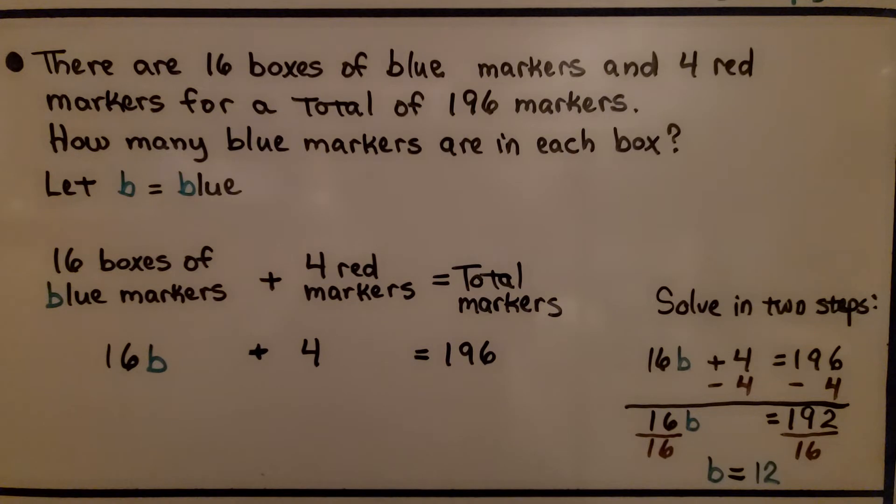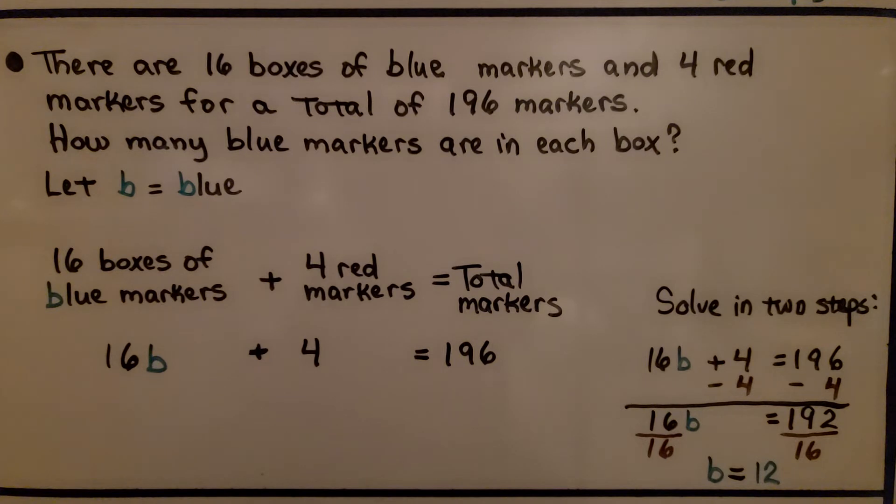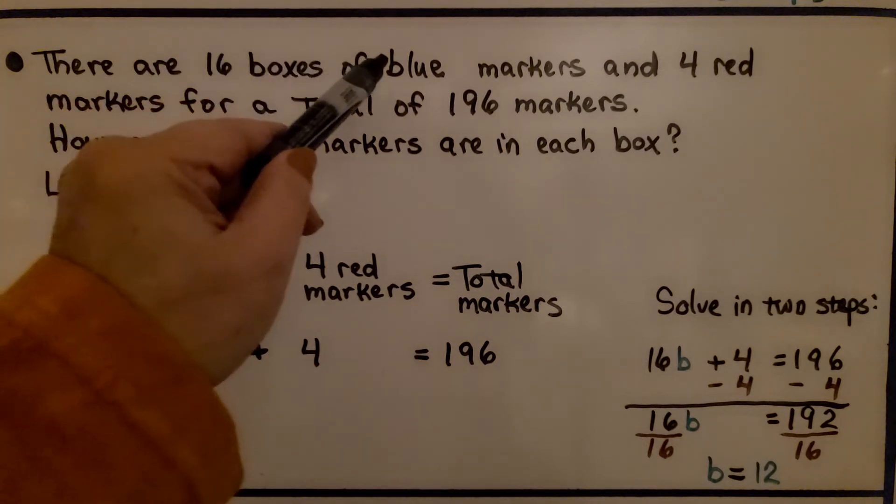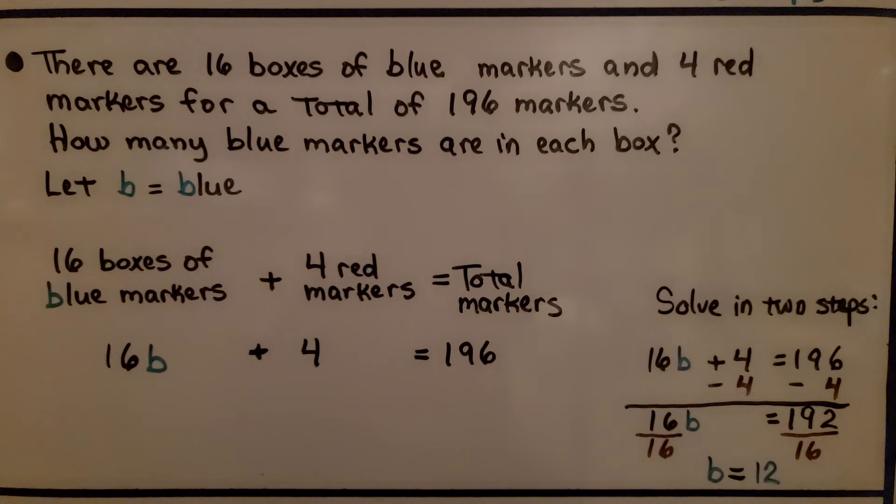Here's another one. There are 16 boxes of blue markers and 4 red markers for a total of 196 markers. How many blue markers are in each box? So pay attention. We have 16 boxes of blue markers, but then there's only 4 red markers. They're not boxes. It's just 4 red markers.